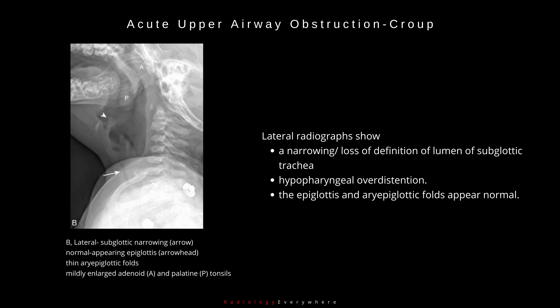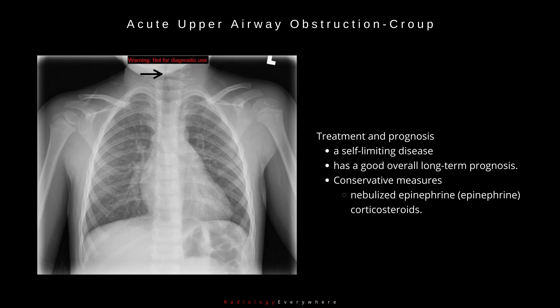Lateral radiographs show a narrowing or loss of definition of the lumen of the subglottic trachea or hypopharyngeal overdistention. The epiglottis and aryepiglottic folds appear normal. Croup is usually a self-limiting disease with a good overall long-term prognosis. Conservative measures, including nebulized epinephrine and corticosteroids, are commonly used.